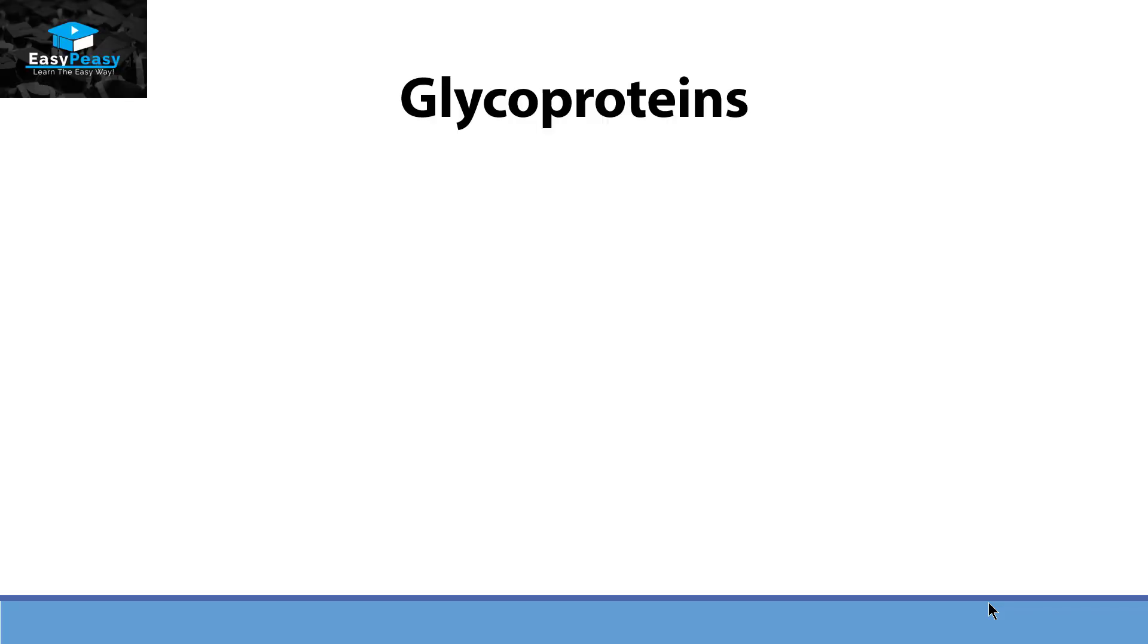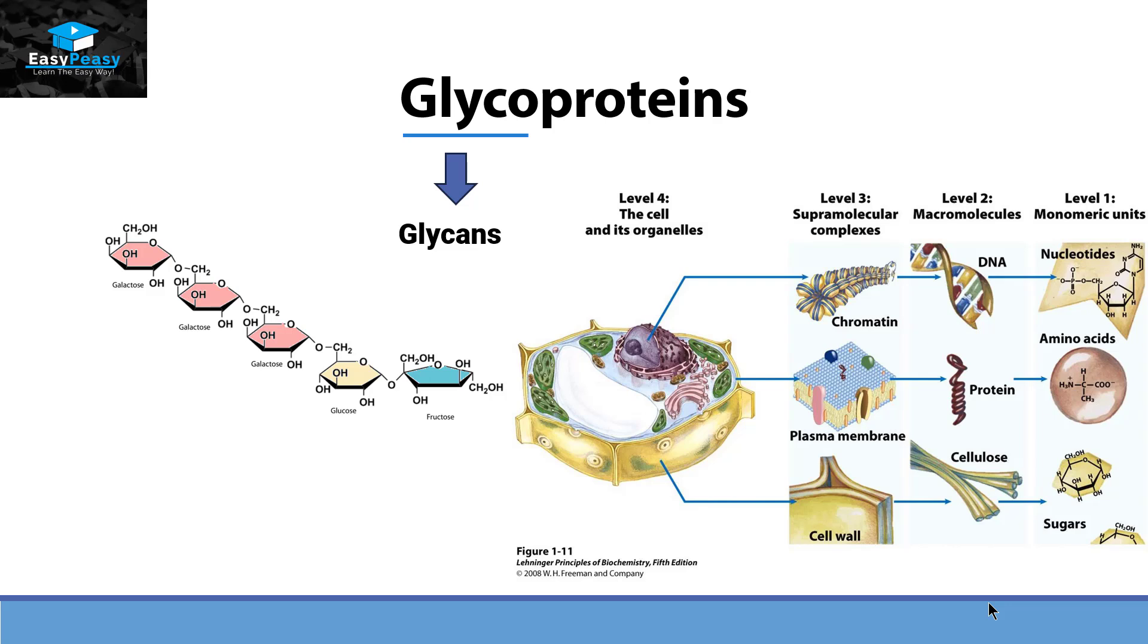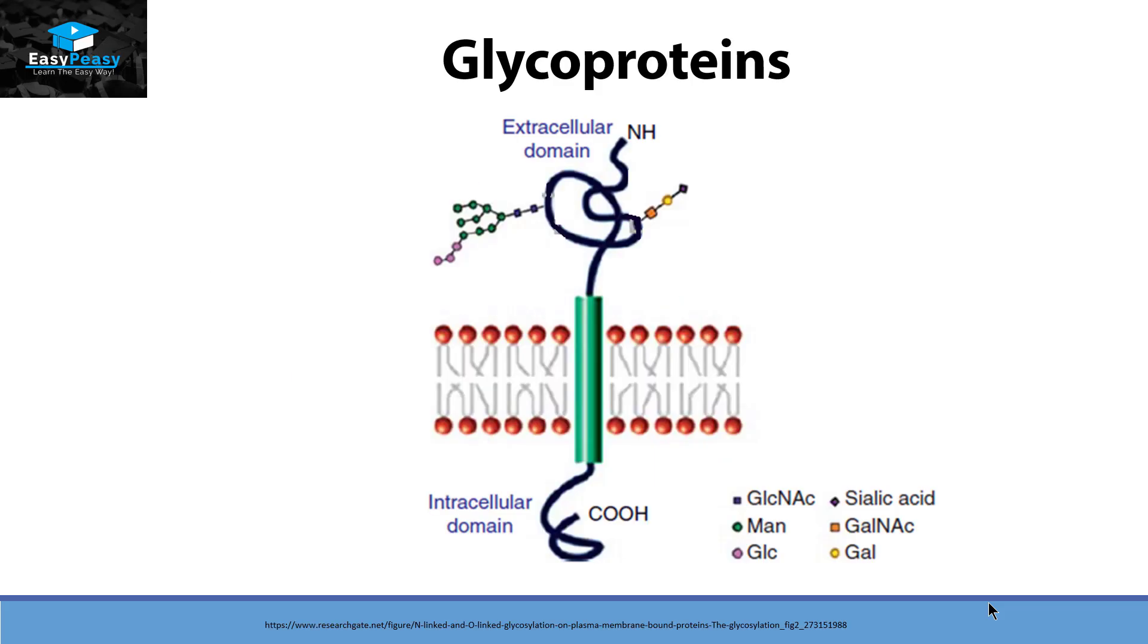Glycoprotein is a combination of two different words. The word glyco comes from glycans and glycan is a type of carbohydrate. Carbohydrate is one of the major biomolecules of our cell. The second part is proteins, which is another major biomolecule of our cell. So when carbohydrate joins itself with proteins, they are called glycoproteins.